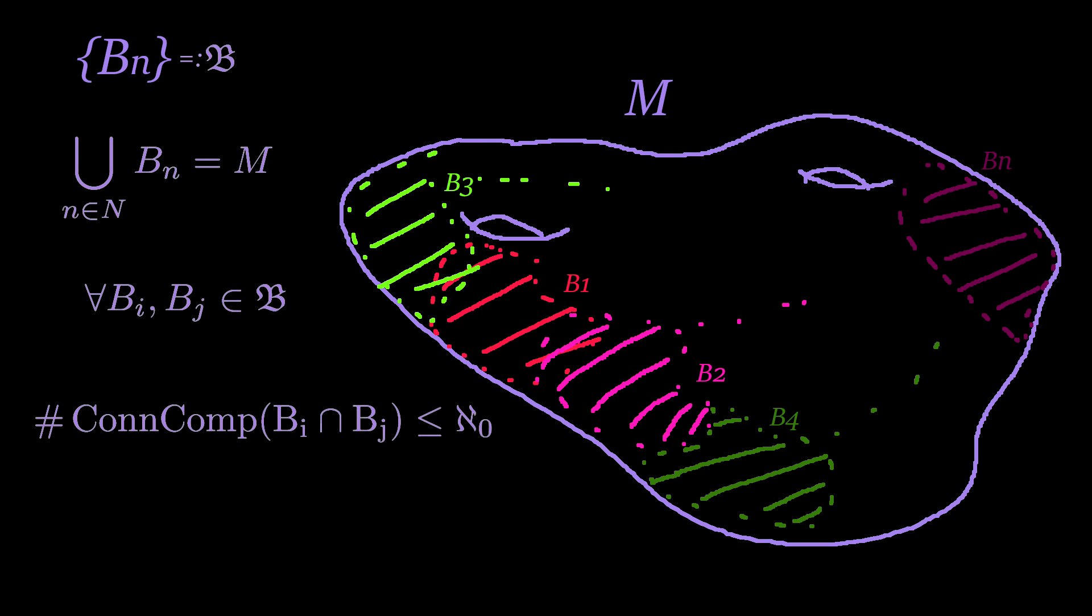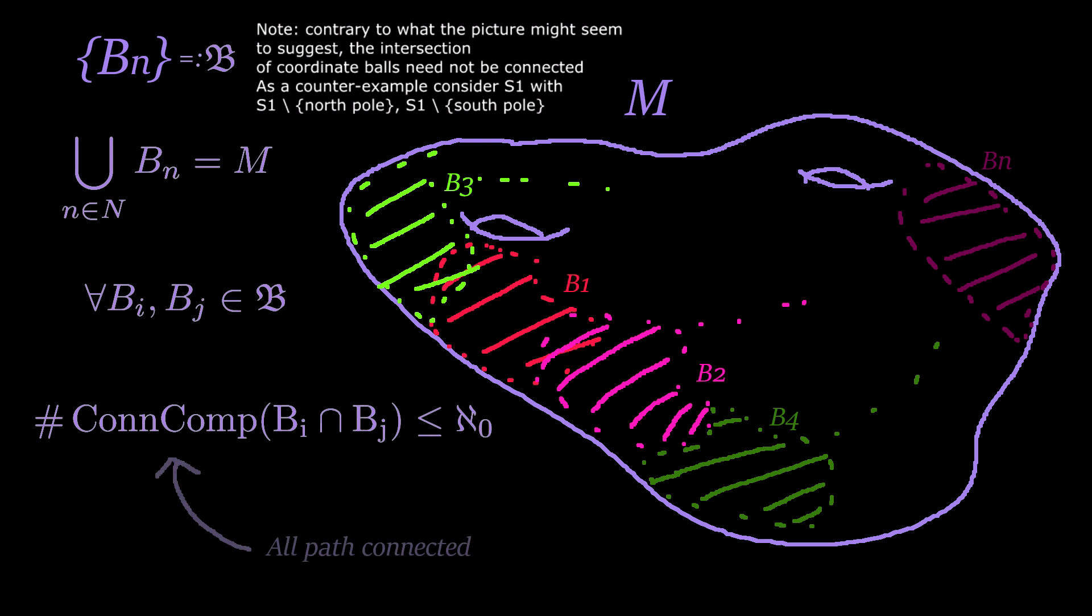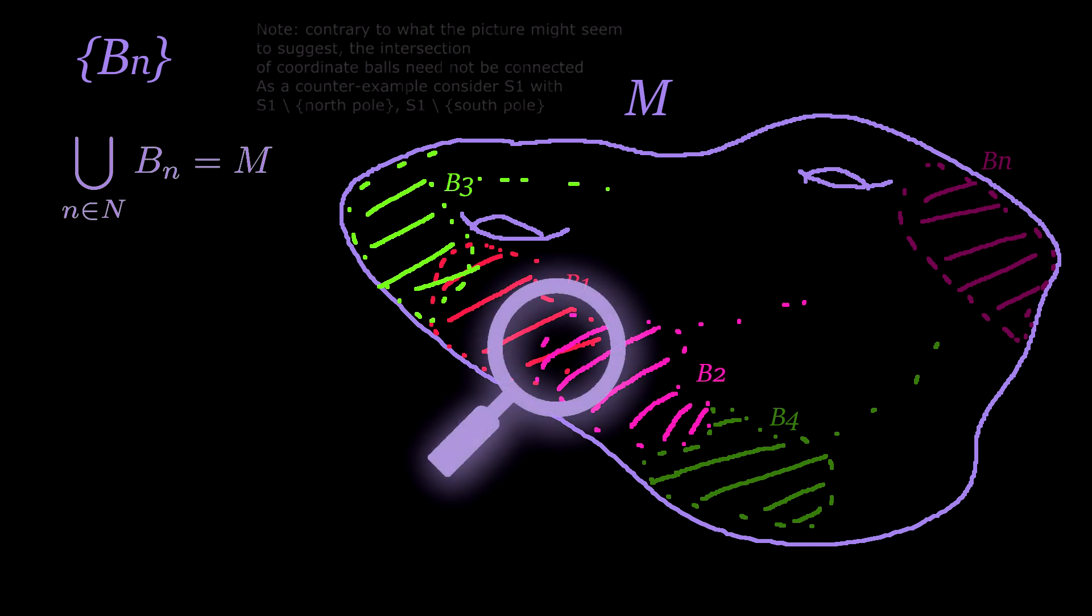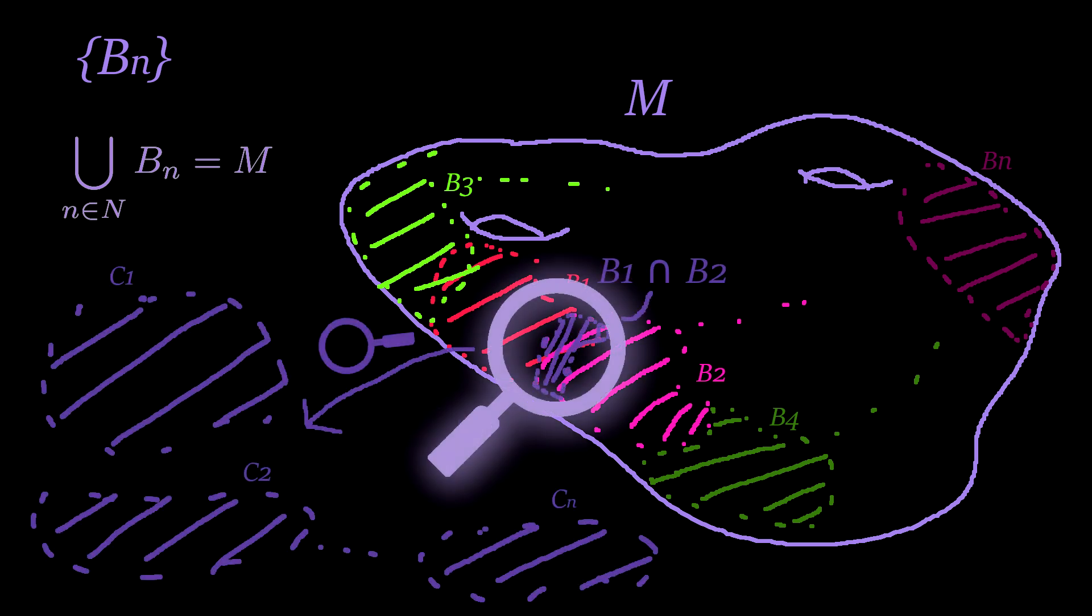Since this intersection is an open sub-manifold, then it will have countably many connected components, and these connected components will be path-connected. This is true in general for manifolds. In fact, manifolds have countably many connected components, which are all path-connected.